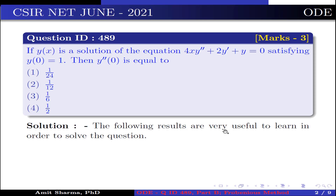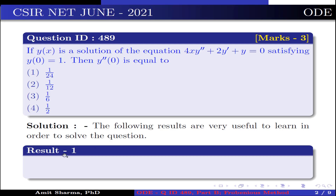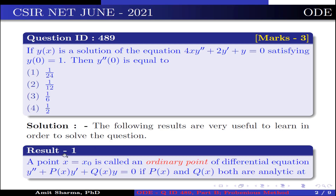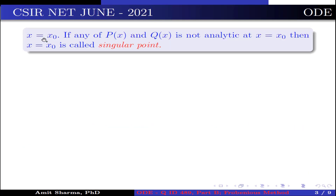The following results are very useful to learn in order to solve the question. Result 1: A point x = x₀ is called an ordinary point of the differential equation y'' + p(x)y' + q(x)y = 0 if p(x) and q(x) are both analytic at x = x₀. If any of p(x) or q(x) is not analytic at x = x₀, then x = x₀ is called a singular point.